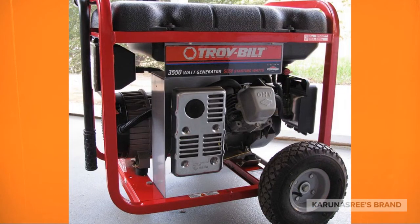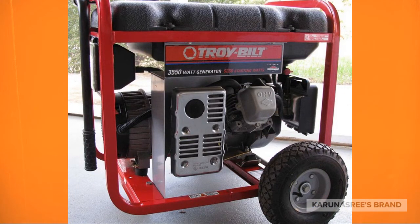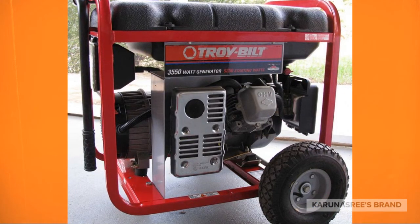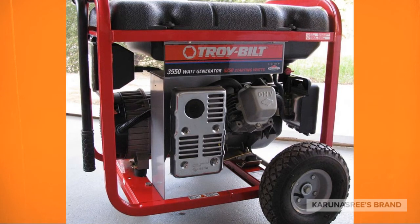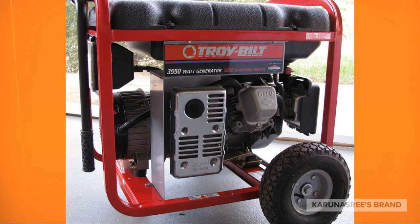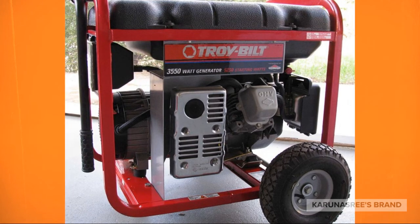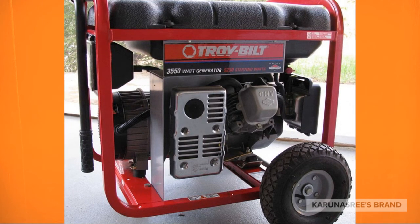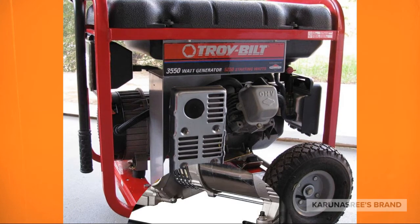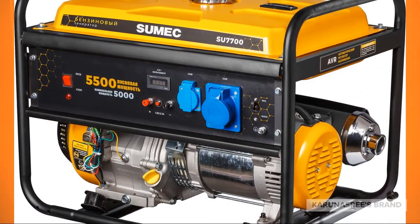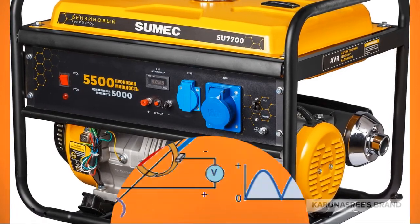Look at the picture on the screen. This device is known as a generator. The function of the generator is to provide electricity. This device functions on the principle that whenever there is a change in magnetic flux linked with the coil, current is generated. Let us find out how this device works.